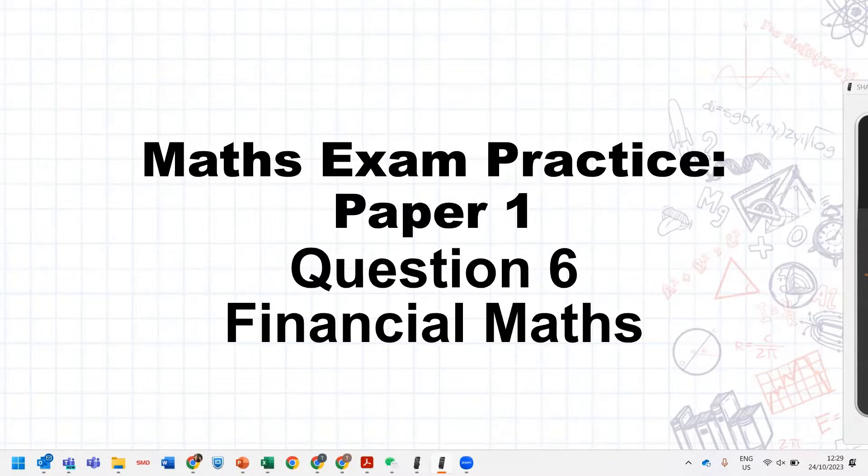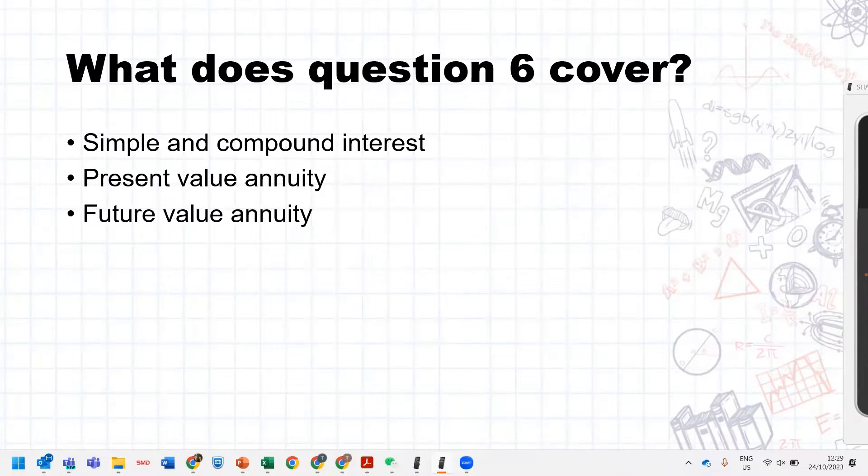Hi guys, welcome to the session on question six of paper one, where we are going to look at financial maths. What's covered in financial maths? Simple and compound interest, which we learned about in grades eight, nine, ten, and eleven. And then the present value and future value annuity, which we cover in grade twelve.